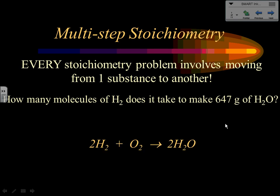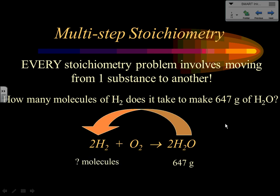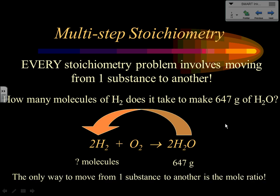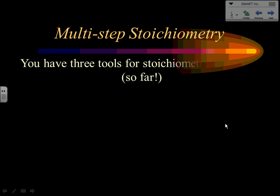Here's our reaction for the production of water from hydrogen and oxygen: 2H₂ plus O₂ makes 2H₂O. What we're trying to do is go from 647 grams of water to find how many molecules of hydrogen it would take. The only way to move from one substance to another is to use the mole ratio, but I don't have moles of either substance, so this is going to involve more work.